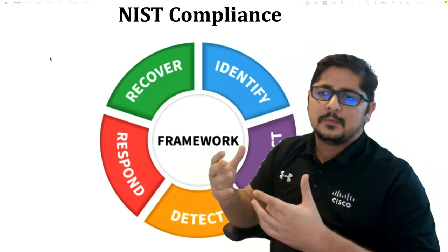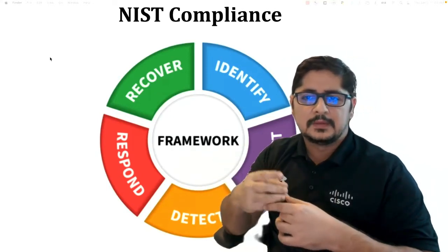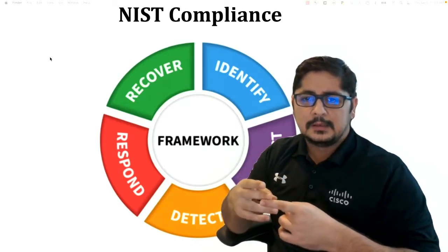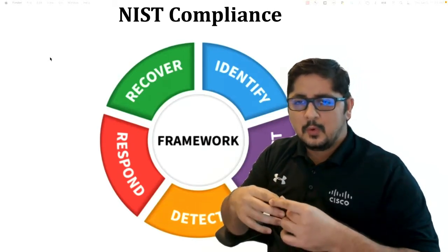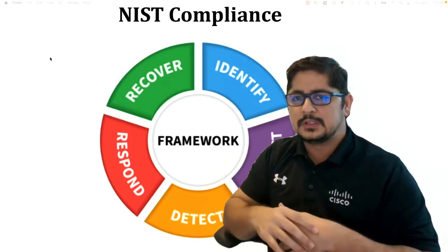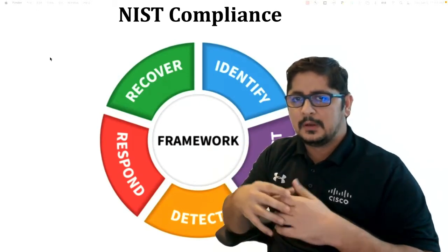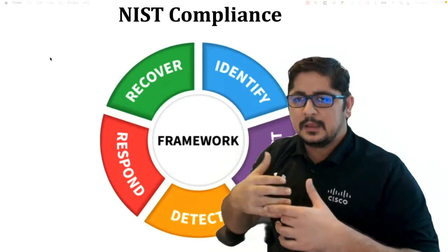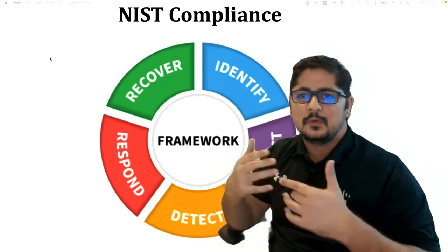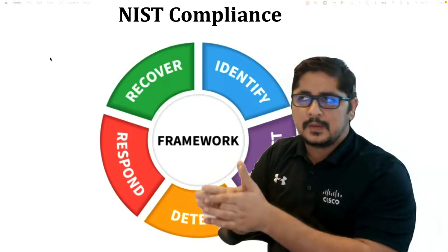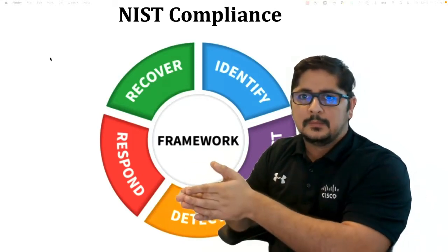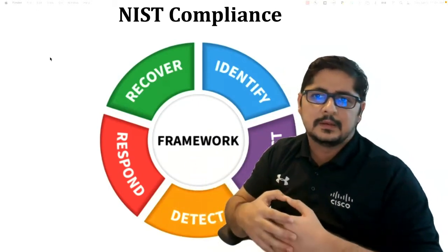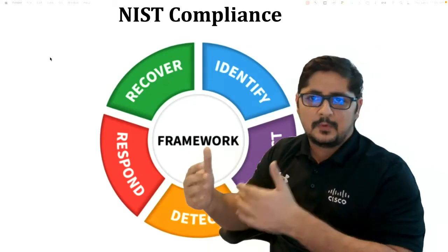This framework consisted of three major components: core, profile, and tier. Core is basically the outcomes that we're trying to achieve as part of our security or risk containment. Profile is very specific to your organization — for example, a healthcare organization would have different priorities than a financial one, and that basically sets your profile.